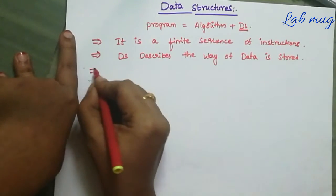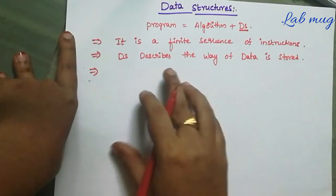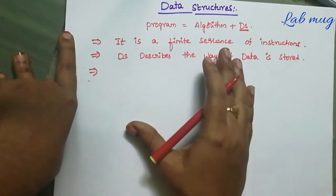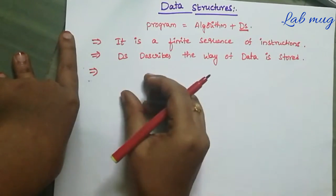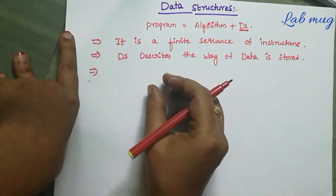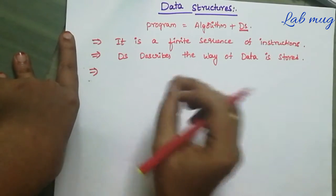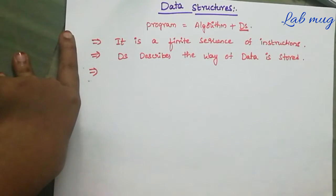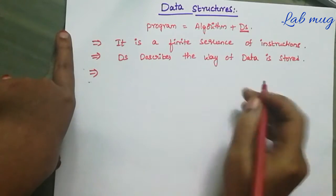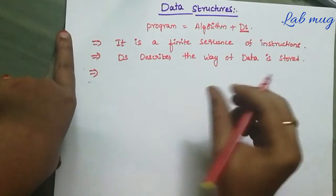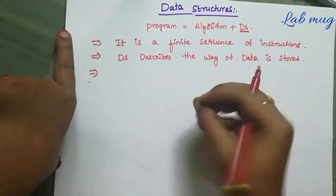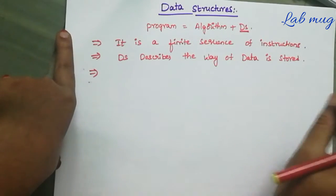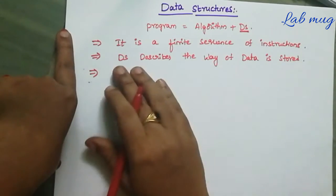And next another point manam data structure guin cheppa lande - it is a representation of logical relationship existing between individual elements of data. For example, two elements dhiskunan - a two elements maddi lo unna interrelationship, that is logical relationship between two elements. A two elements maddi lo unna logical relationship ni cheppa edha anandu data structure. So just basic definition: the way data is stored - that process ni manam data structure anandu.